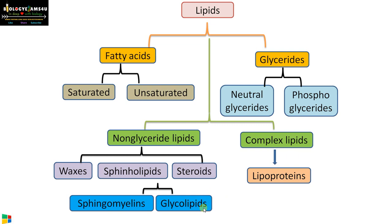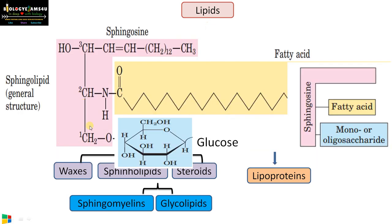The next one is glycolipid. As the term indicates, it is a sugar-lipid complex. It also has a sphingosine backbone, then there is a fatty acid chain. The X group contains glucose, therefore it is called a glycolipid — a sugar attached to the lipid group. The X group can be a monosaccharide or an oligosaccharide. Here it is glucose, bonded to the lipid by a glycosidic bond.